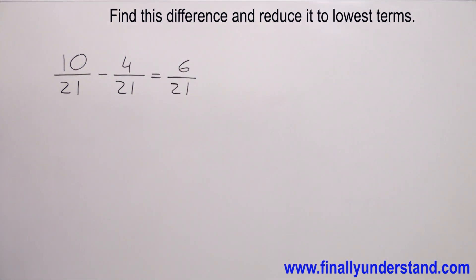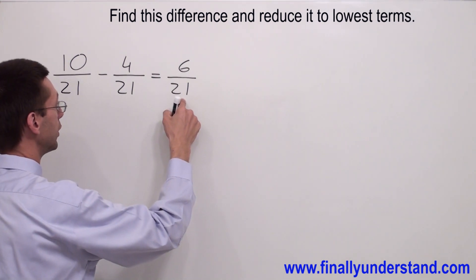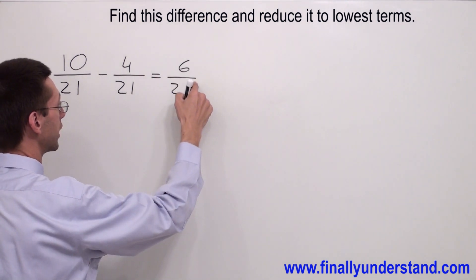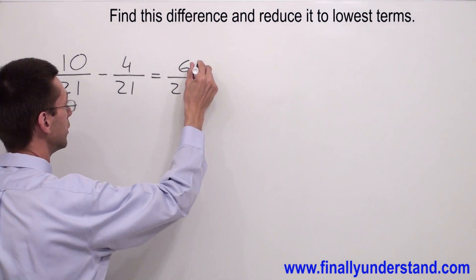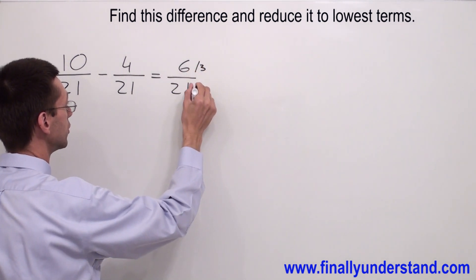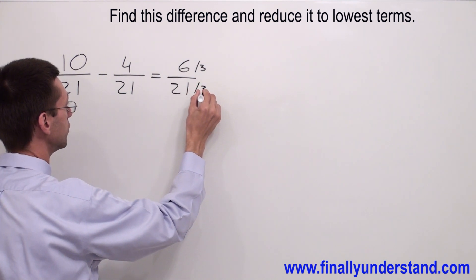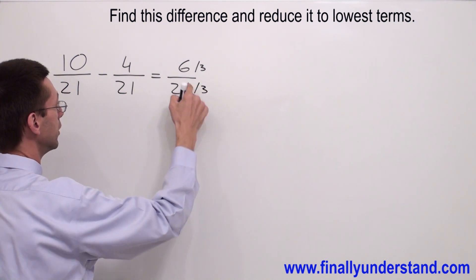Now let's take a look — we have 6 and 21. We can reduce this fraction by 3, because 6 is divisible by 3 and 21 is divisible by 3.